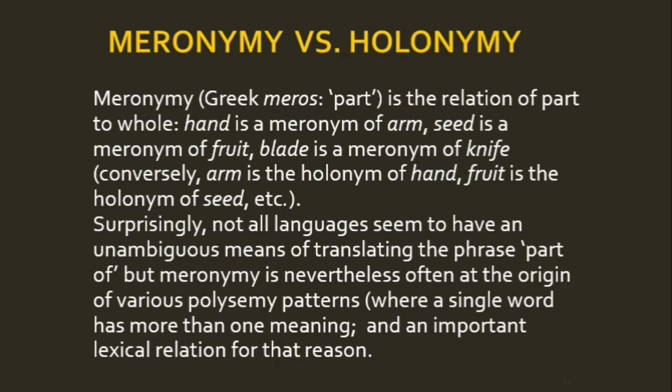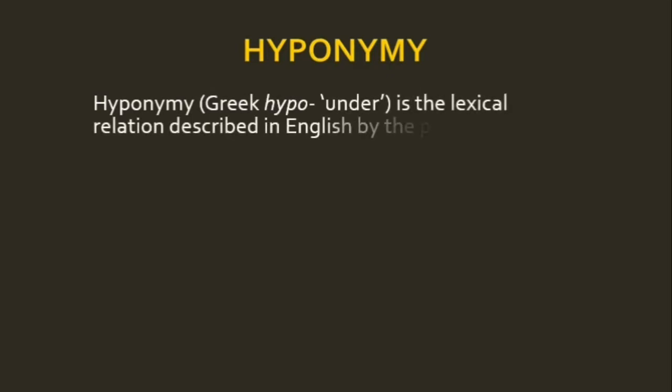Meronymy is an important lexical relation. We also see that many words in languages have a polysemic nature — they have more than one meaning. If you look at a dictionary you can see a word with different meanings listed, and this is called polysemy. Hyponymy — from the Greek hypo meaning under — is a relationship in which the meaning of one word is included in the meaning of another. For example, the meaning of rose is included in the meaning of flower, boy is included in male, and man is included in human.